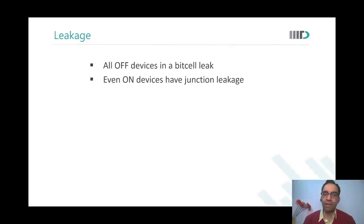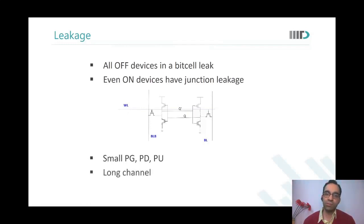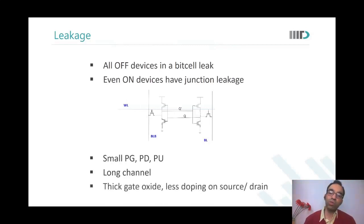For all leakage till now we looked at bitline leakage only, but here we are talking about overall leakage. All our devices have leakage and even-on devices have junction leakage. To reduce overall leakage, you want all devices to be kept as small as possible, you want the channel length to be as large as possible to reduce sub-threshold leakage of the off devices, and you want gate leakage to be reduced by using thick gate oxides.